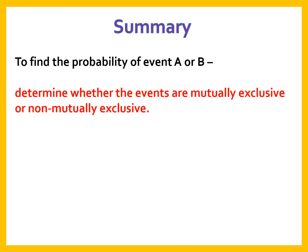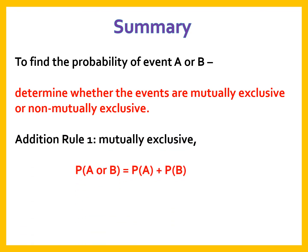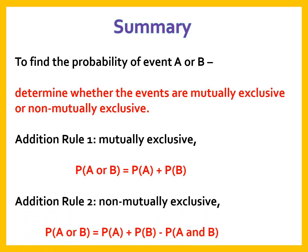So we can summarize: to find the probability of event A or B, we first determine whether the events are mutually exclusive or non-exclusive. Addition rule 1 for mutually exclusive events: probability of A or B equals probability of A plus probability of B. Addition rule 2 for non-mutually exclusive events: probability of A or B equals probability of A plus probability of B minus the combined probability P(A and B).